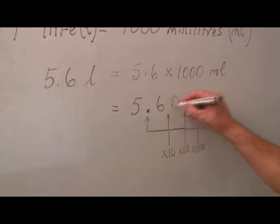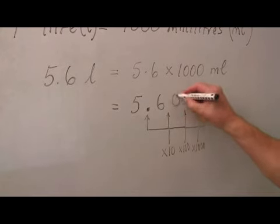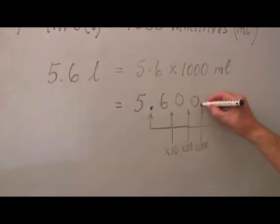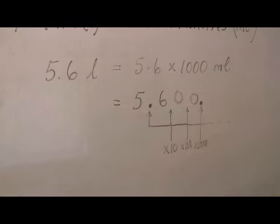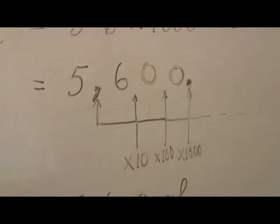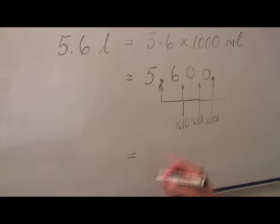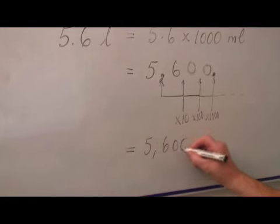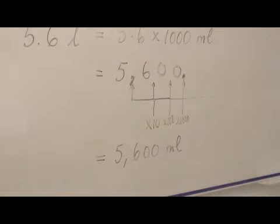So I have to put noughts here because there are no zeroes there and my decimal point now is going to come there and this now becomes of course my comma for my thousands. So 5.6 litres is actually 5600 millilitres.